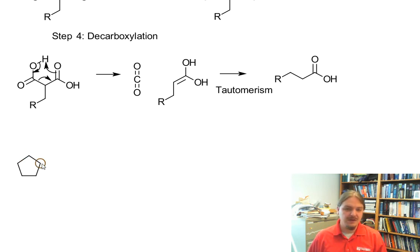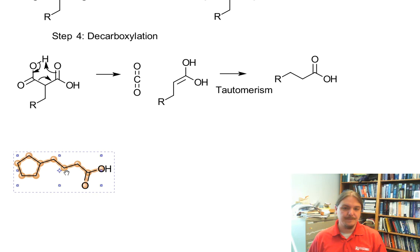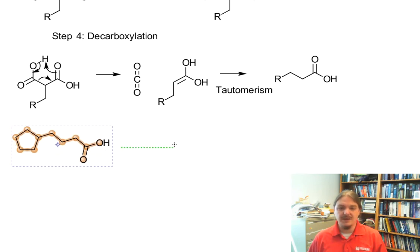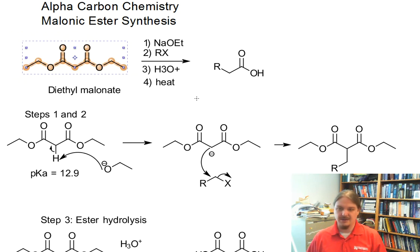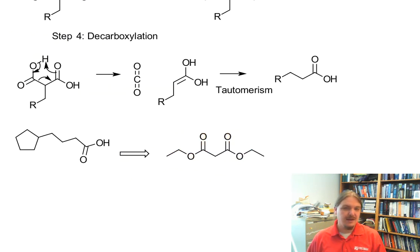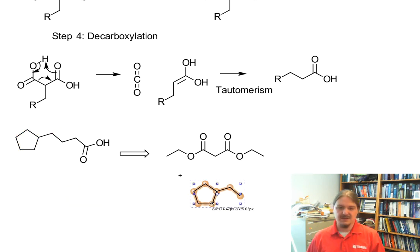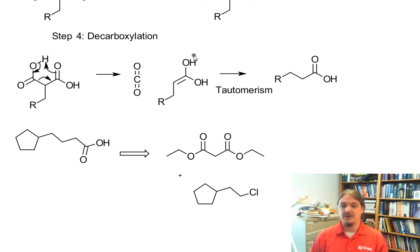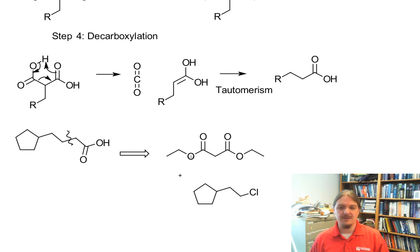If we were given the structure of some kind of carboxylic acid, we could ultimately think about synthesizing it from diethylmalonate with an appropriate base and an alkyl halide — maybe we'll pick a specific halogen — with the key bond being formed at the alpha position. One of the carboxylic acid groups from the ester is lost through decarboxylation.